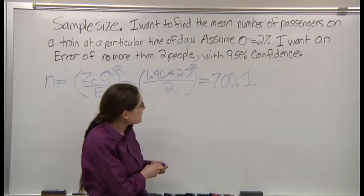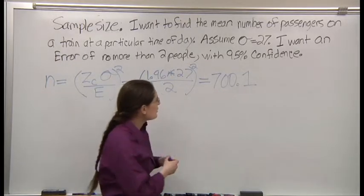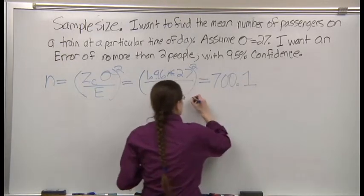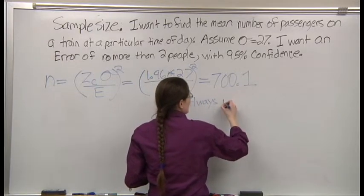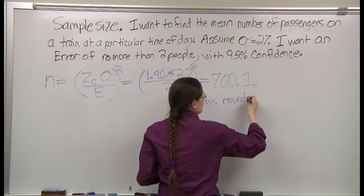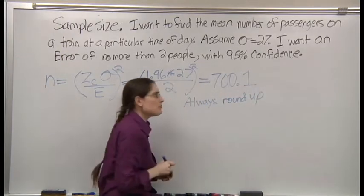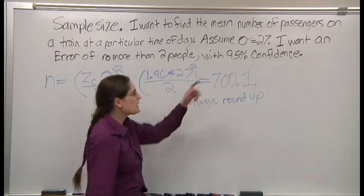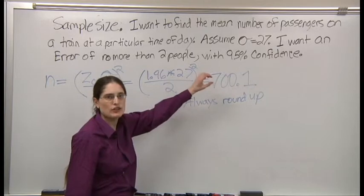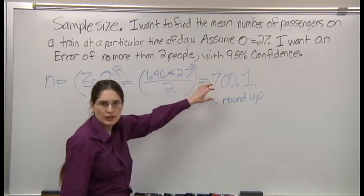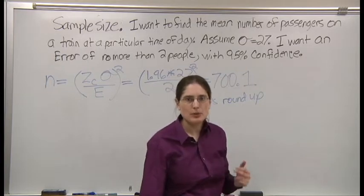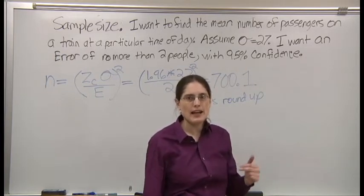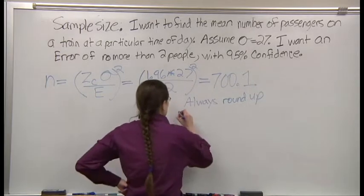In fact, not 700. For a sample size, you cannot have a fraction as your answer. If you're doing a survey, you can't ask half a person. You can't measure half a man. So we always round up.